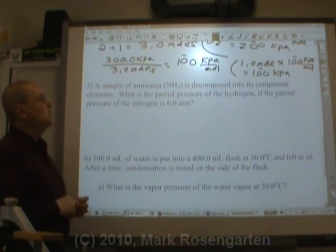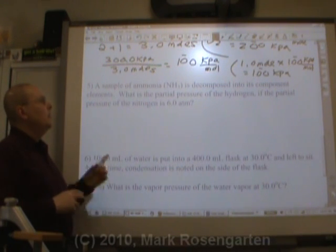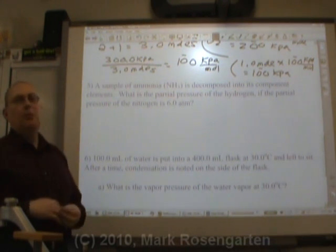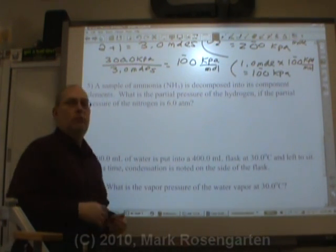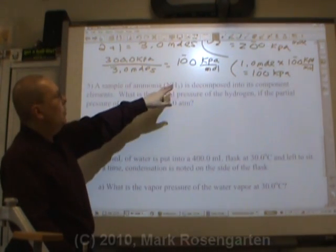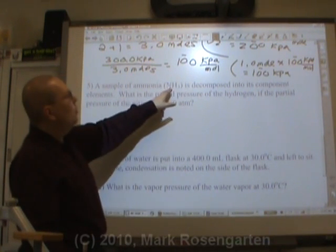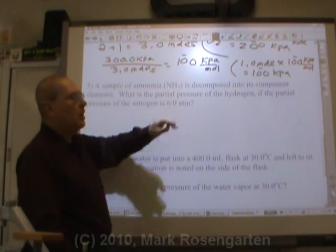A sample of ammonia is decomposed into its component elements. What is the partial pressure of the hydrogen if the partial pressure of the nitrogen is 6.0 atmospheres? Well, this is insanely easy. If you break NH3 down into its elements, you're going to get 1 mole of nitrogen for every 3 moles of hydrogen. See that? It's a 1 to 3 ratio of nitrogen to hydrogen.